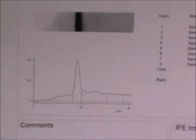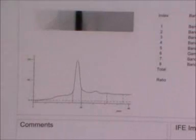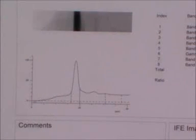Track 7 shows a strong haemoglobin S band that runs between A2 and A.